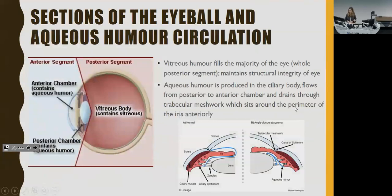The eyeball can also be divided into anterior and posterior segments. The posterior segment contains the vitreous body, which adds structural integrity to the eye with a fairly static circulation. The anterior segment is more important in terms of pathology. It's divided into the anterior and posterior chambers, and the main relevance is the circulation of aqueous humour — made in the ciliary body, flowing forward through the pupil anterior to the iris, draining through the trabecular meshwork via the canal of Schlemm into the venous circulation. This is relevant later when we discuss acute glaucoma.